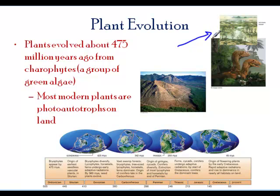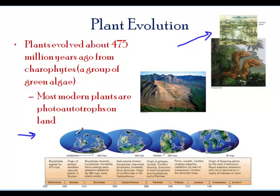The earth actually became cooler over time, because earlier after the Big Bang it was a very hot environment. As water levels changed and temperature changed, many different kinds of plants arose.